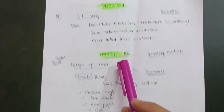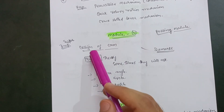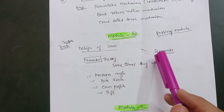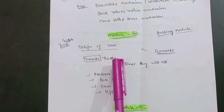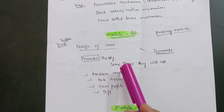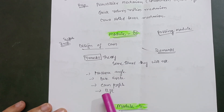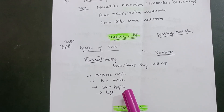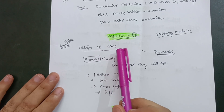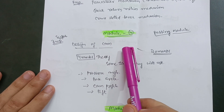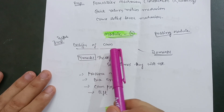Module 4 is again a super important module. There are design of cam problems which carry 20 marks. Sometimes they give some theory concepts worth 4 marks and the problem carries 16 marks accordingly. It includes pressure angle, base circle, cam profile, and lift - you have to write down the definitions of these concepts. For design of cam, go through uniform velocity and simple harmonic motion concepts so that you can easily design the cam profile.